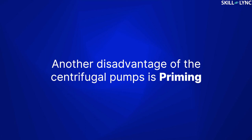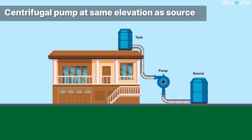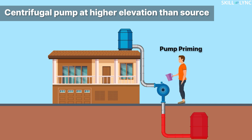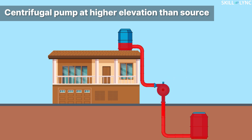Another disadvantage of centrifugal pumps is priming. Priming is required when the elevation of the pump is more than the elevation of the liquid. The impeller is not able to generate sufficient suction pressure to lift the water against gravity from its resting surface. This is because a centrifugal pump works by pushing the water through centrifugal force instead of sucking it. Because of this, the impeller needs to be primed, which is normally done by filling the casing and the pipes of the pump with the working liquid. An external priming port is provided to do this.